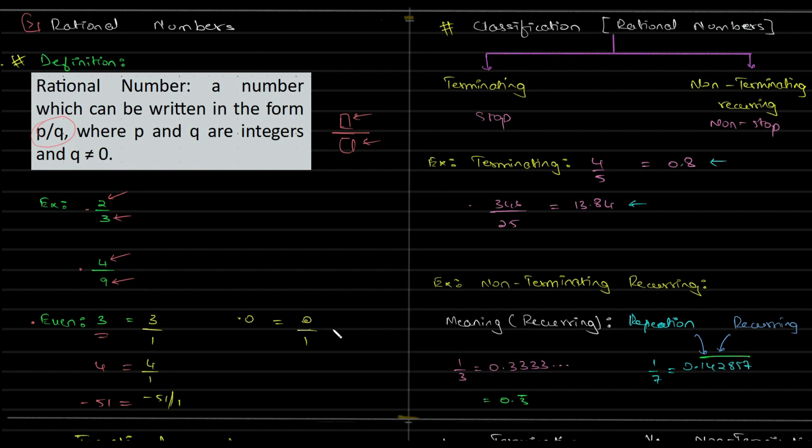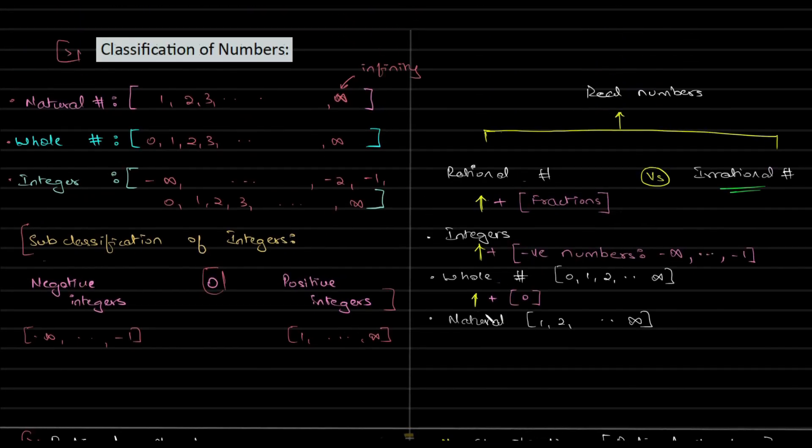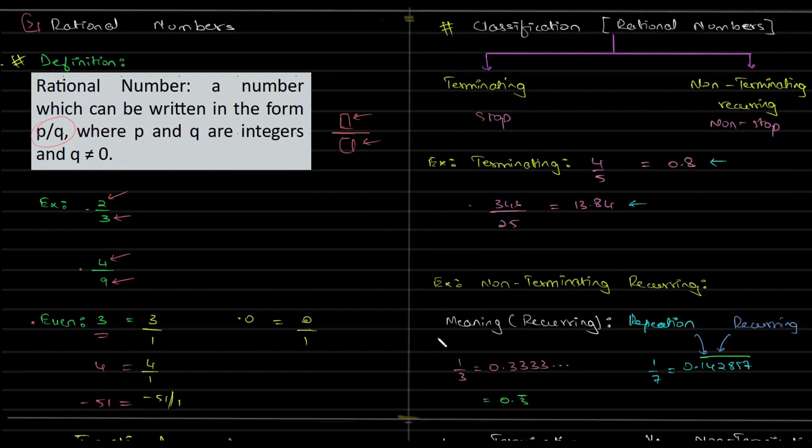In the next section, we will look into irrational numbers. We have looked at natural numbers, whole numbers, integers, and rational numbers. In the next section, we will understand irrational numbers, and after that we will start with your problems.